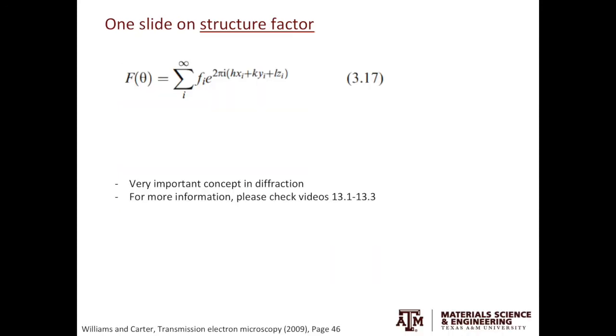I'll use the last slide to quickly introduce a new concept called the structure factor. Capital F is the structure factor. It equals to the summation of Fi multiplied by e to the power of 2πi, Hx, Ky, and Lz. Fi is the atomic scattering factor. It offers the amplitude information when diffraction happens. Hx plus Ky plus Lz offers the phase information. The concept of structure factor is very important for both X-ray diffraction and electron diffraction. I have three video tutorials on this topic. You can check them out if you are interested in learning more about the structure factor.